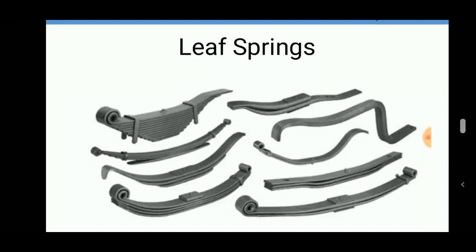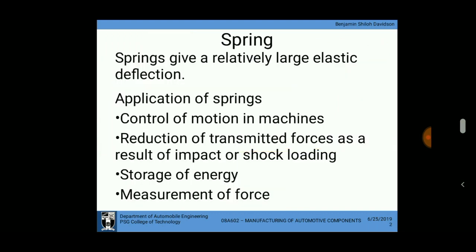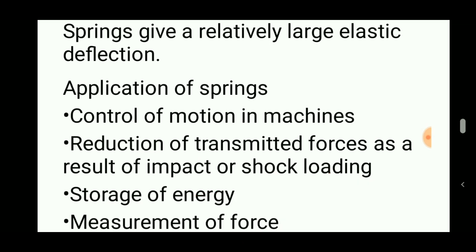Hello viewers, welcome to Engineering Study Materials. Today we are going to discuss about leaf springs, which are generally springs in automobiles. First of all, a spring is a material that is an energy absorbing agent or a part with large elastic deflection. It can be used in automobiles for the control of vibration as a damping agent.